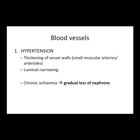Perhaps the most common cause of kidney failure — particularly chronic kidney failure in the Western world — is hypertension. The major problem with hypertension is thickening of vessel walls, particularly small muscular arteries and arterioles. We're looking at the renal arterioles and small muscular arteries downstream. If all of these get thickened, there's luminal narrowing, leading to less flow and chronic ischemia — a gradual loss of nephrons — which can lead to renal failure.